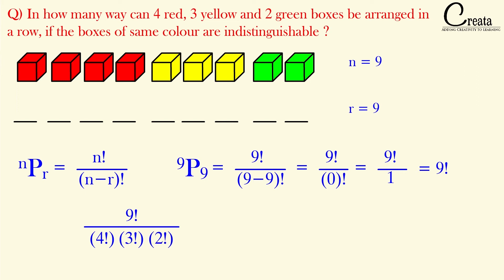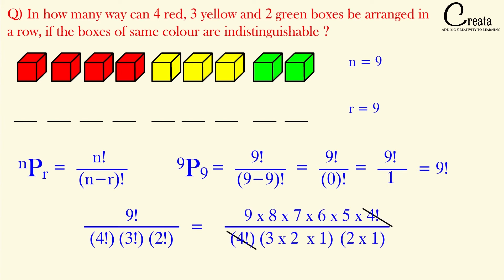Why have we done so? Because we are having 4 same red boxes, 3 same yellow boxes, and 2 same green boxes. So we have divided our traditional answer — 9 factorial — by 4 factorial, 3 factorial, and 2 factorial. On solving, we get our answer as 1260.